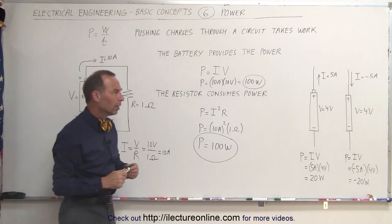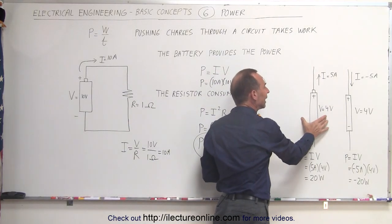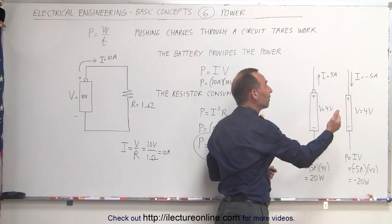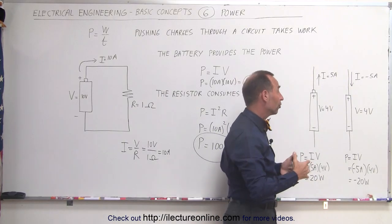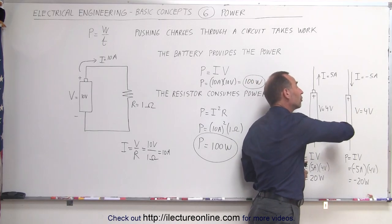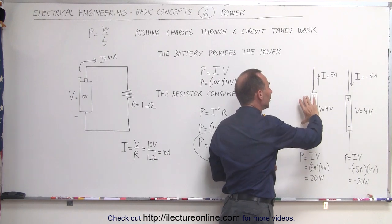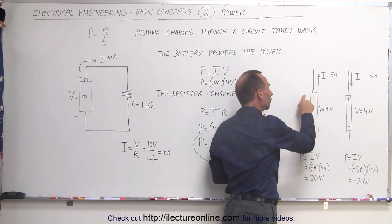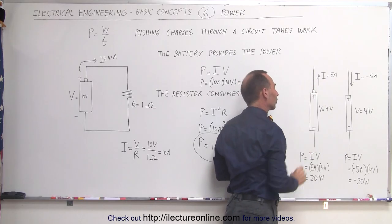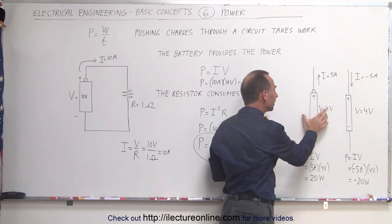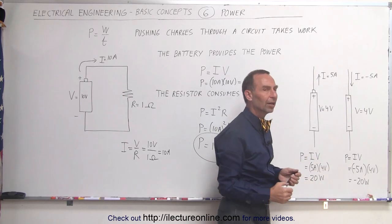One more thing we should mention. Notice that we can have a current flowing in the direction indicated by the battery. Sometimes we have the current flowing in the opposite direction, because there may be another battery, another power source that is larger than this one, causing the current to flow in the opposite direction. If the polarity of the battery, the positive end and the negative end are such that it's indicating the same direction as the direction of the current, then the power provided by this battery will be positive. A positive 5 amps times 4 volts is 20 watts in this case.